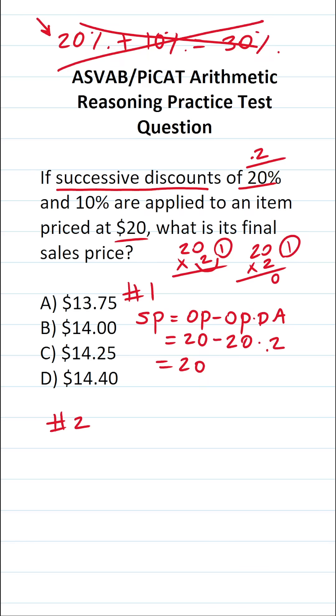2 times 0 is 0. 2 times 2 is 4. Bring our one decimal back in. This becomes 20 minus 4. 20 minus 4 is 16.